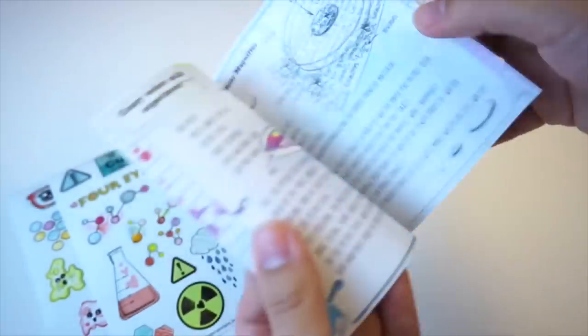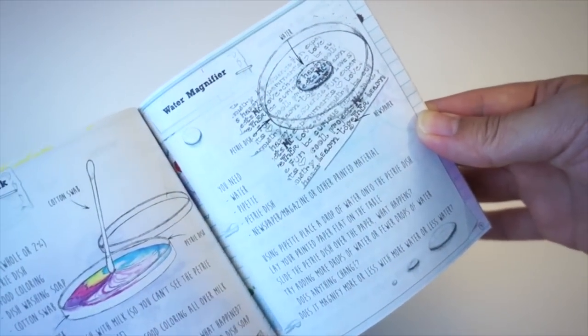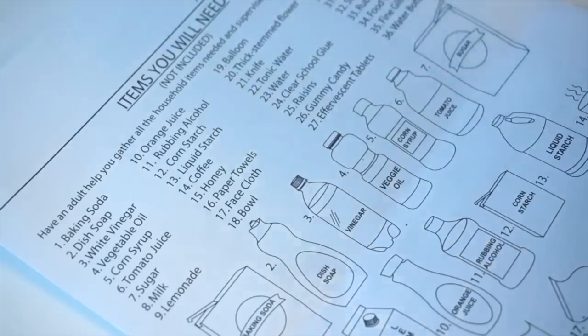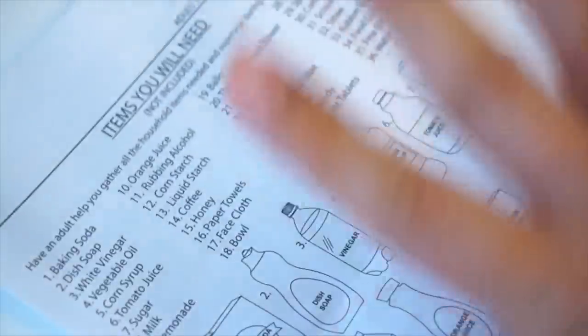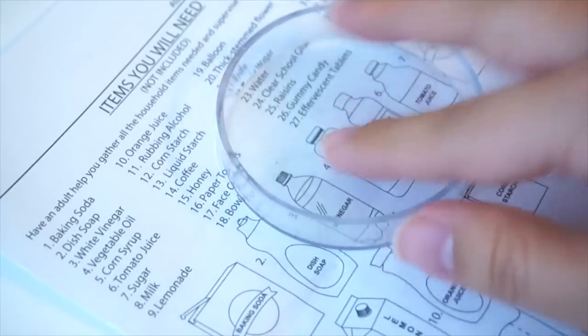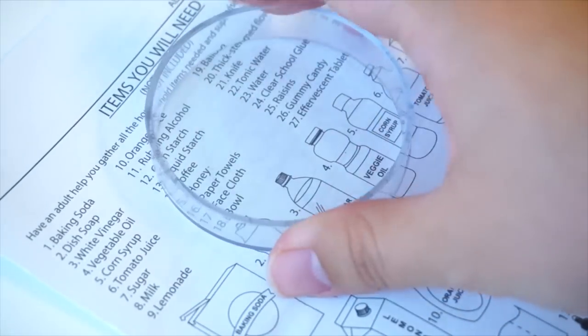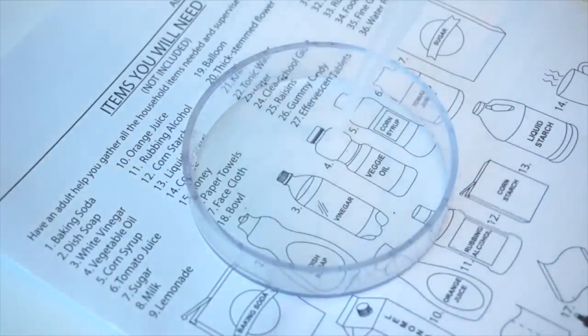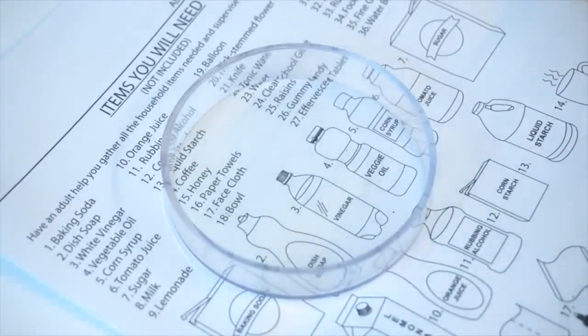So the experiment that we're going to be trying out is going to be this one right here called Water Magnifier. The guide inside this book actually tells you to use a magazine or newspaper, but I'm actually going to use this sheet that comes with the set. I'm going to put my petri dish right on top and using my pipette or spoide, I'm going to put some water right on the petri dish.